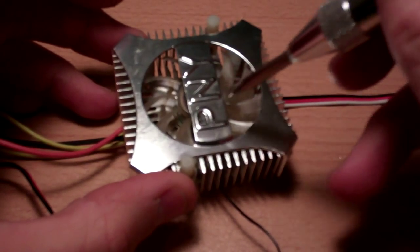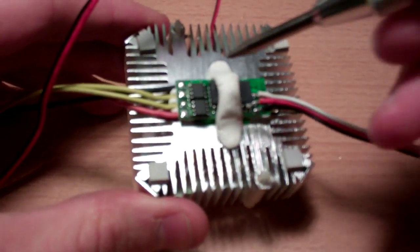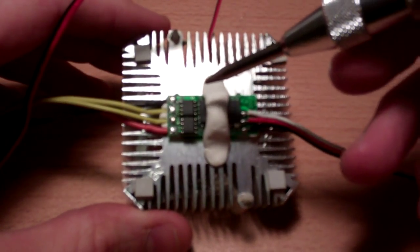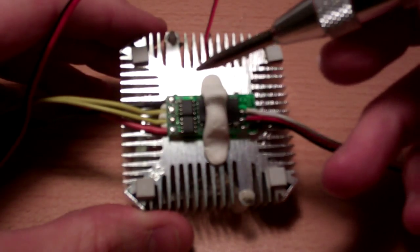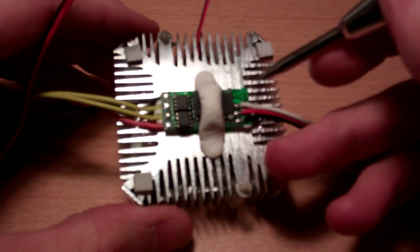I took this heatsink and fan combo off of the graphics card, and then I took the ESC and basically took off the rubber coating from it just using a utility knife and cut it away.